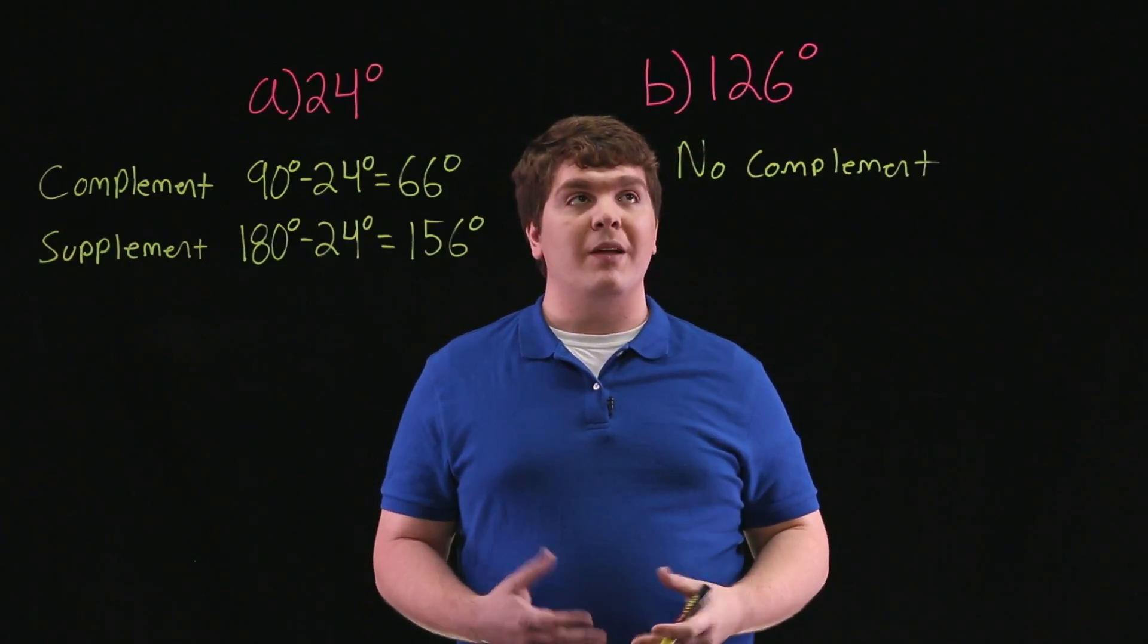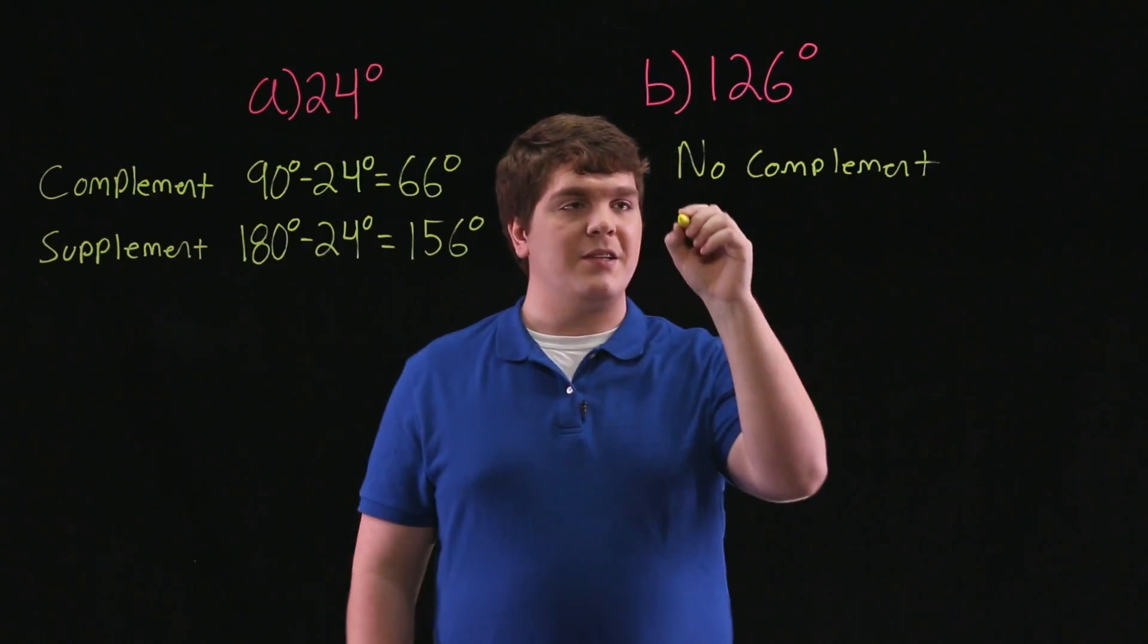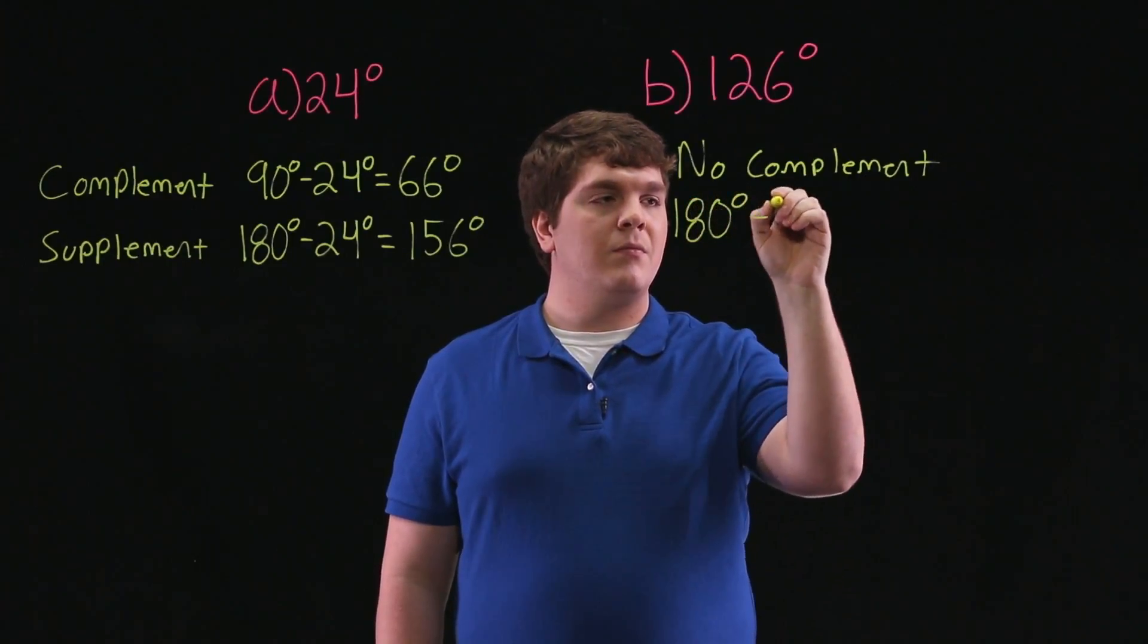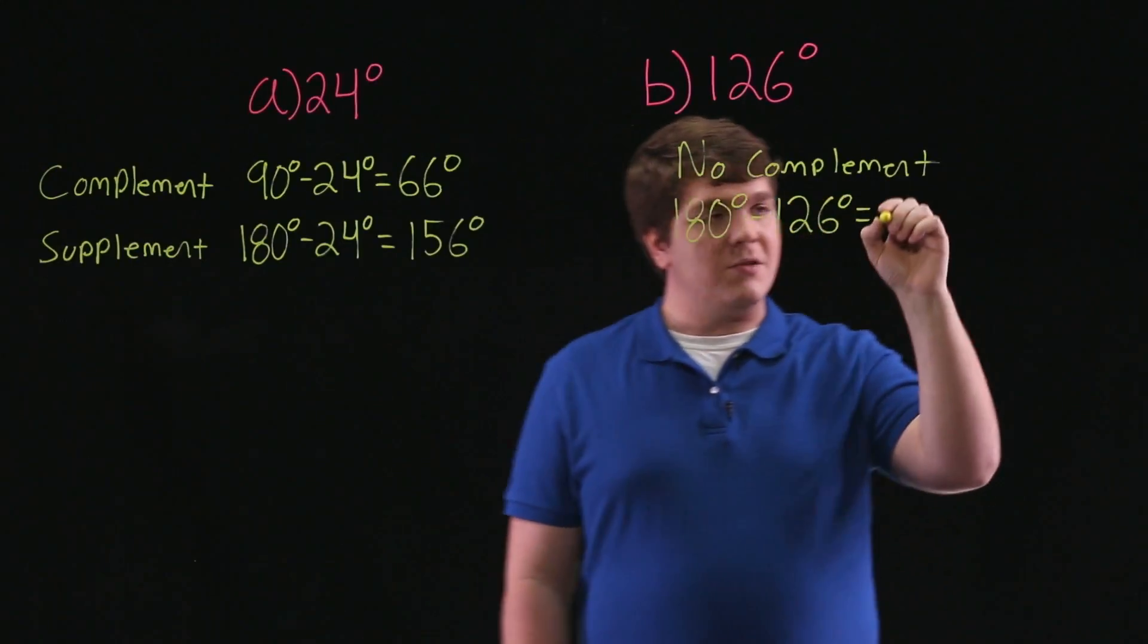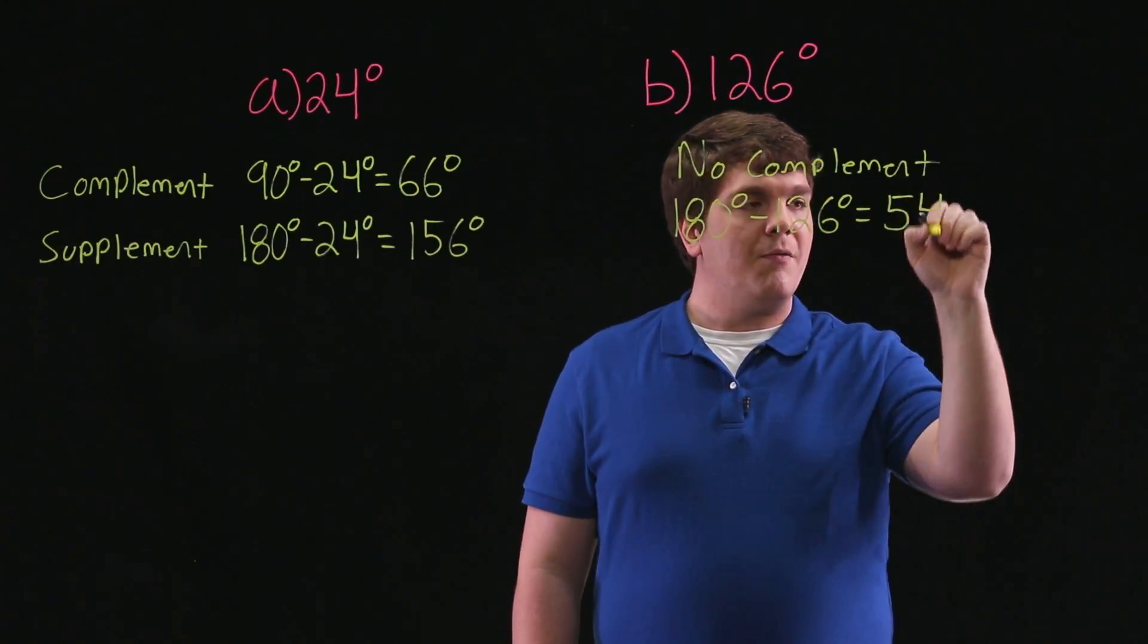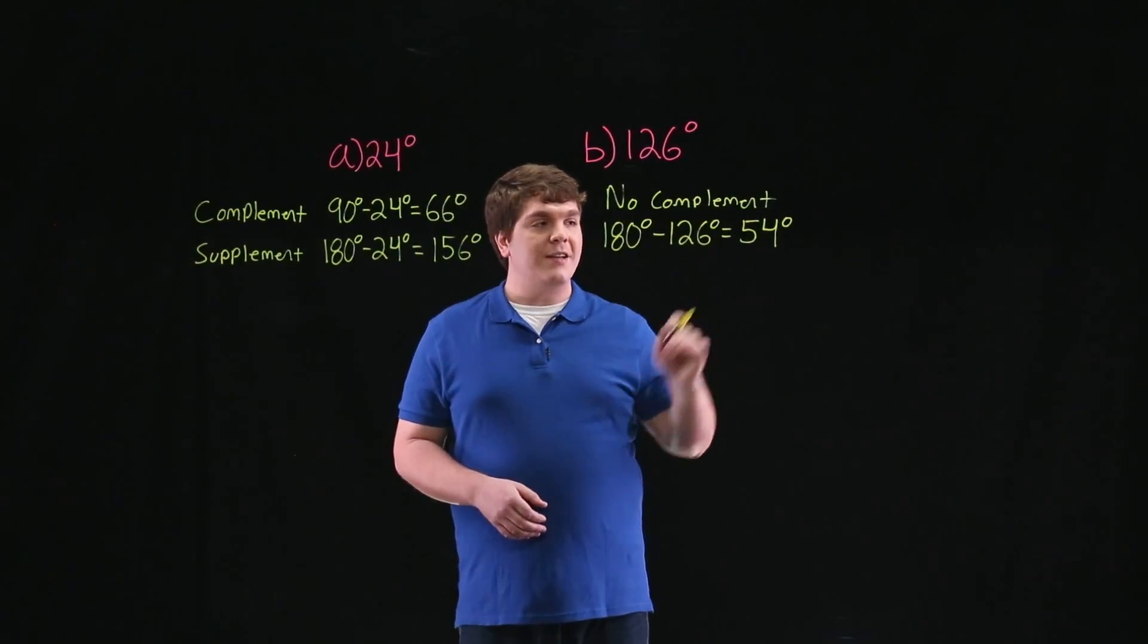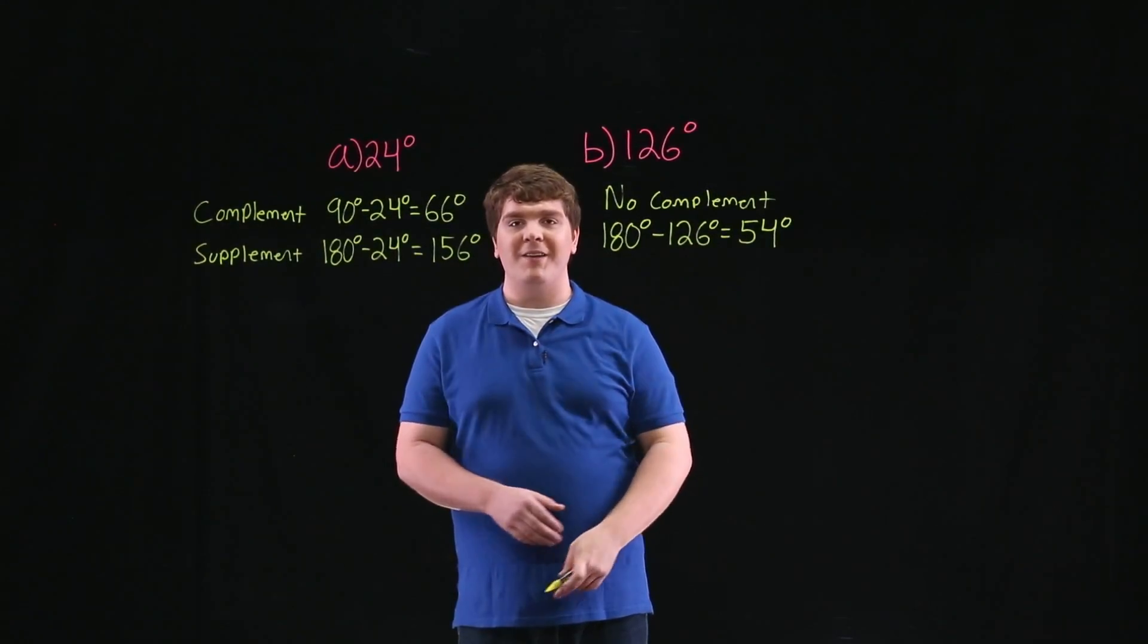And in order to find the supplement, we'll find 180 degrees minus 126 degrees, which is equal to 54 degrees. And here, we can also check that these two angles are supplementary, as the sum of 54 and 126 is equal to 180 degrees.